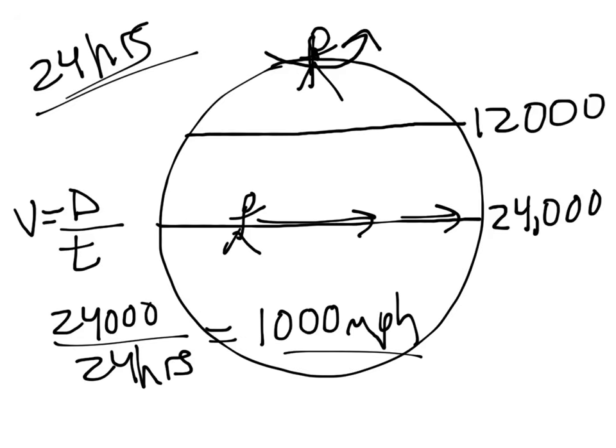If you're at 60 degrees North or South latitude, the distance is half. And so now the velocity is 12,000 miles in 24 hours, which means you're moving at a clip of about 500 miles per hour.